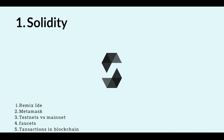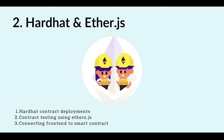With that, we will complete our Solidity section. The next step will be learning about Hardhat and ethers.js. Until now we will have learned how smart contracts are built; now we will see how smart contracts are deployed, how we test those smart contracts, and how to connect smart contracts with our front-end. Hardhat and ethers.js are used for these purposes.